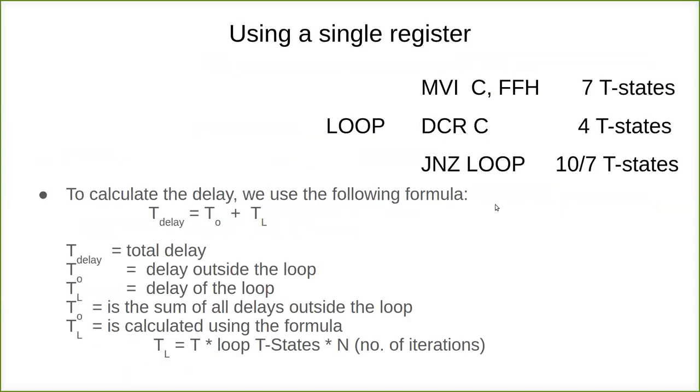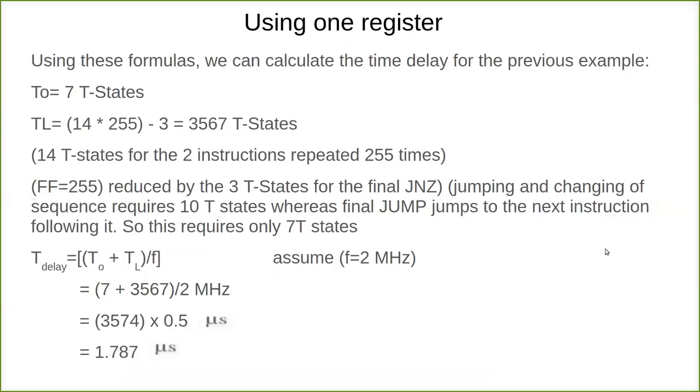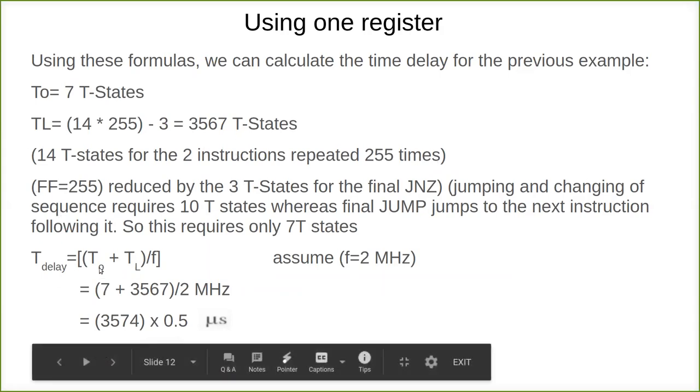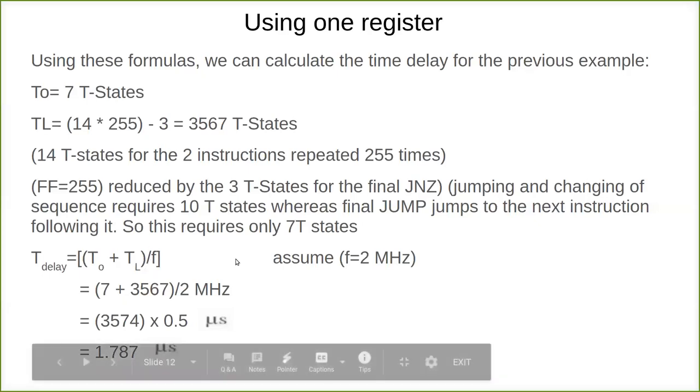Why minus 3? Because the last statement is also calculated, and we subtract it because the last execution of JNZ will have only 7 T-states—only 3 machine cycles. So we calculate this and subtract. This gives the total T-states, which together give the total time delay of the particular loop.